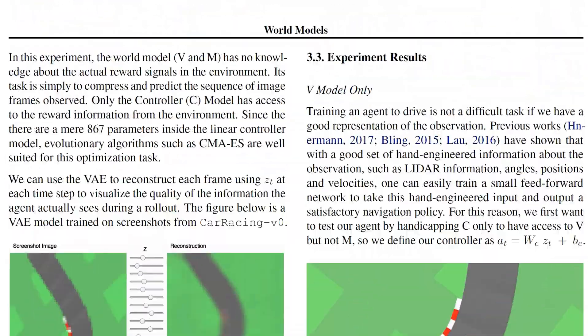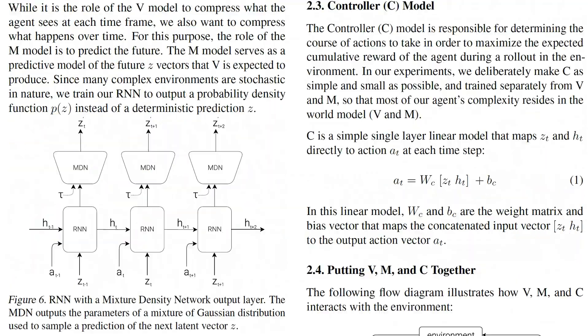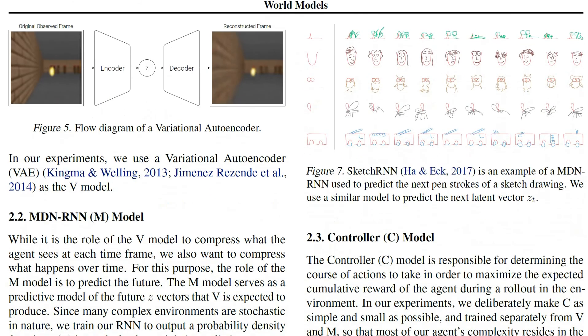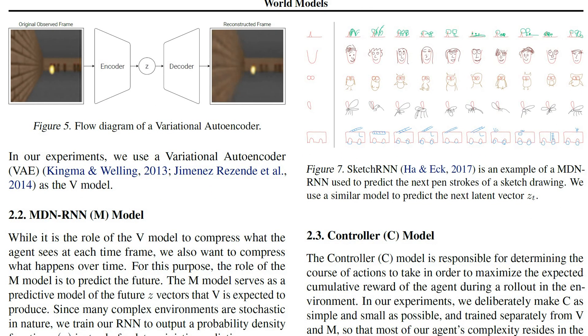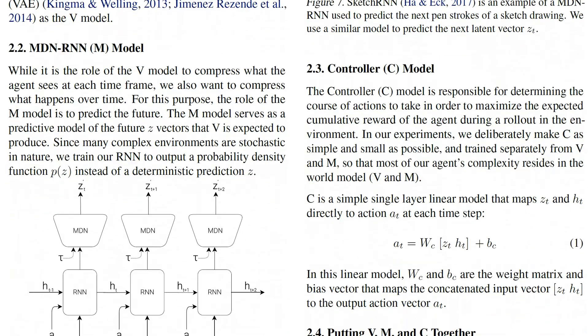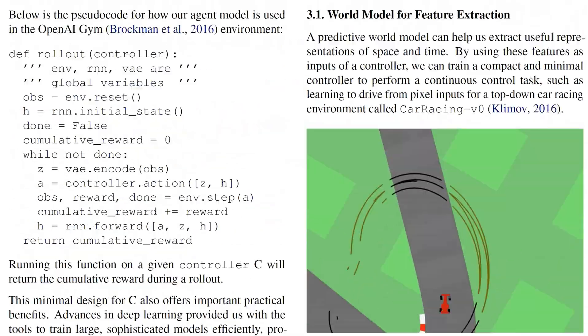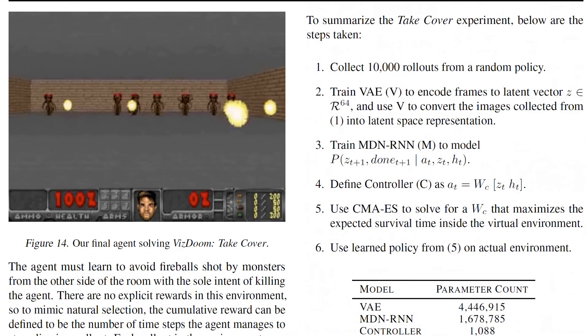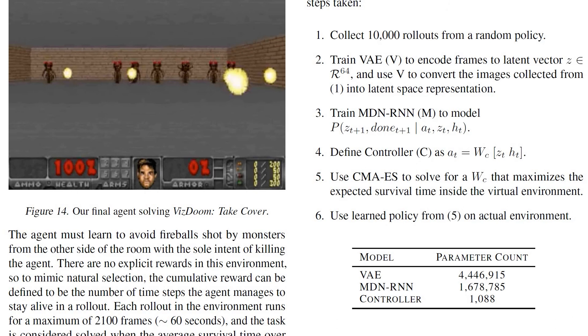So how do they do this? They do it in multiple stages. First thing they do is they collect a bunch of samples from the environment. They go to the environment, they simply do a random policy and then they collect a bunch of samples. The process is outlined down here. Collect 10,000 rollouts from a random policy.